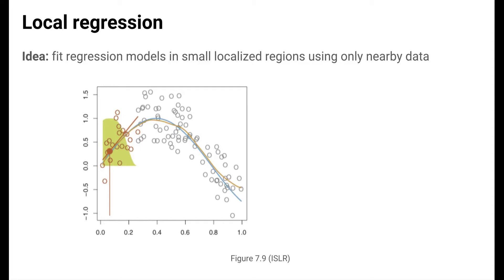Let's start with local regression. The idea behind local regression is to fit regression models in small, localized regions of the predictor, using only a nearby subset of the data to do so. This is illustrated in this figure from the ISLR book. In this panel, the local regression method is trying to make a prediction at about x equals 0.05. We see that the colored points are contributing to a local fit at this point. The gray points are left out.